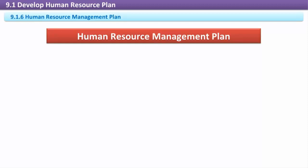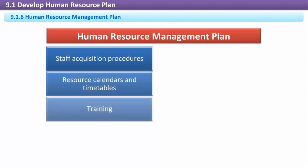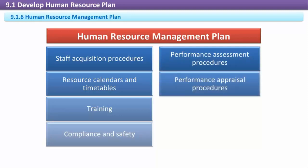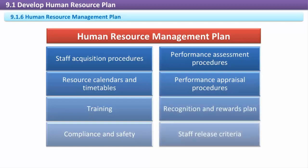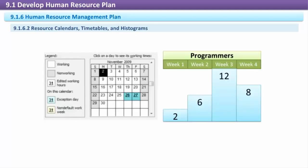How in-depth and formal the Human Resource Management Plan needs to be depends upon the project, but the plan needs to address each of the following: Staff Acquisition Procedures, Resource Calendars and Timetables, Training, Compliance and Safety, Performance Assessment Procedures, Performance Appraisal Procedures, Recognition and Rewards Plan, Staff Release Criteria. The Staffing Management Plan describes how and through what methods the people needed for the project will be acquired, which may include both personnel internal to the performing organization and external to it, such as consultants. It also needs to include any applicable organizational policies relating to staffing or recruitment, and it will also include the planned costs for personnel, whether by role, profession, or grade, resource calendars, timetables, and histograms.